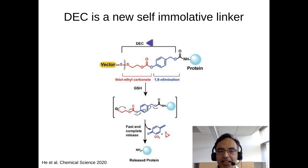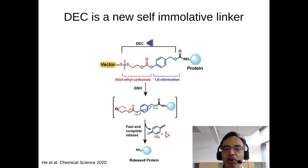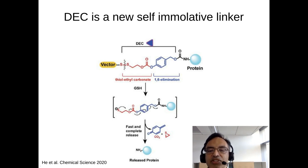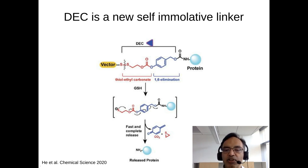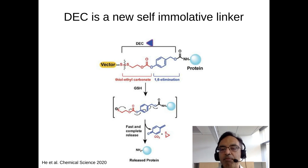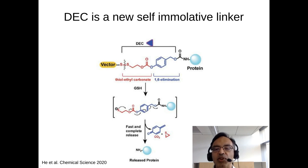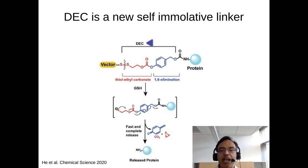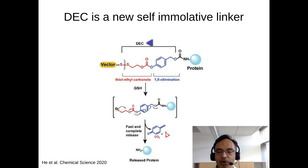Conjugating things to Cas9 is problematic because if you modify the lysine residues of Cas9, you will almost certainly inactivate it. To get around this, we developed a new linker called the DEC linker — a disulfide self-immolative linker. The DEC linker is composed of a thioethylcarbonate linker combined with a 1,6 elimination linker, which modifies the lysine residue of your protein. However, in the presence of glutathione or thiols present in the cell, the disulfide bond is broken, triggering two self-immolative cascade reactions that completely release the protein without any modification of the lysine residues.